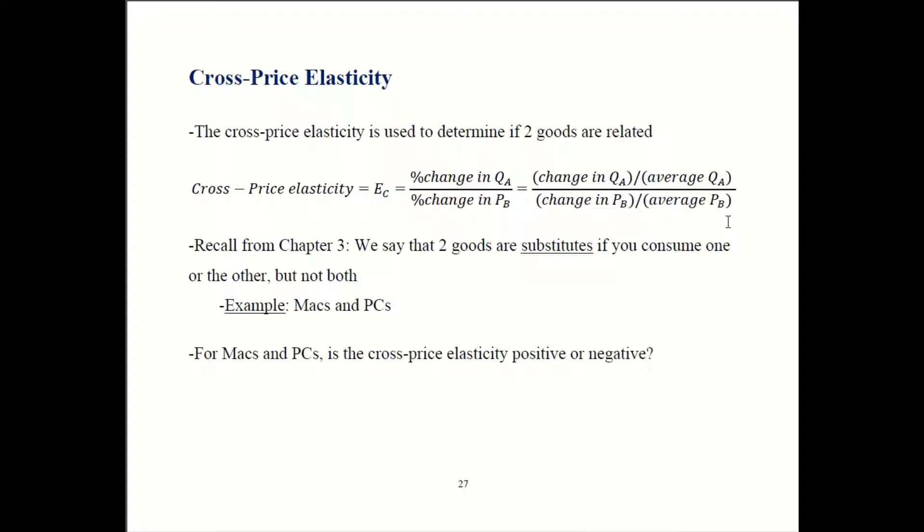So first a question for you guys to reflect upon. We use Macs and PCs as examples of substitutes. You don't probably have both. You buy one of them. Would you expect the cross price elasticity to be positive or negative? So go ahead and think about that and pause the video until you think you have an answer. When you're ready, press play and we'll see if you're right.